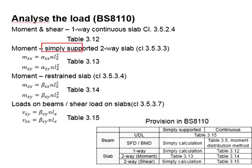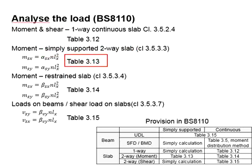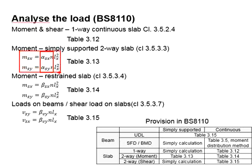For a simply supported two-way slab, table 3.13 is referred. From the table, we obtain the alpha_sx and alpha_sy coefficients to be substituted into the equations to determine the moment acting on the member.